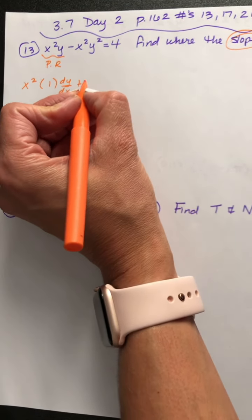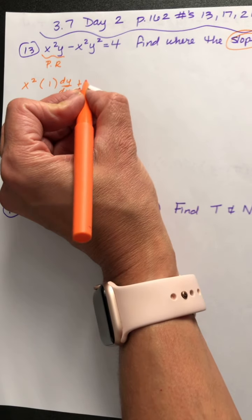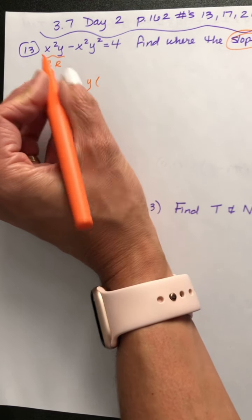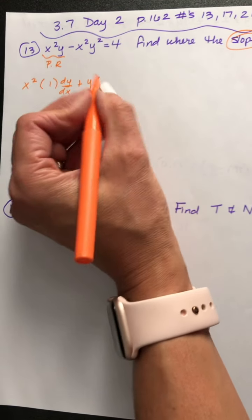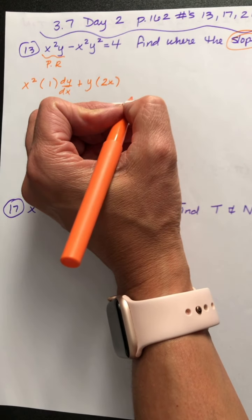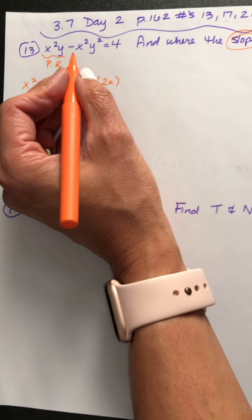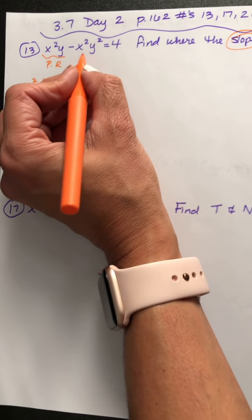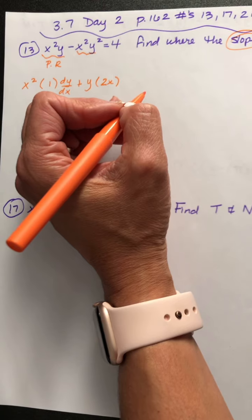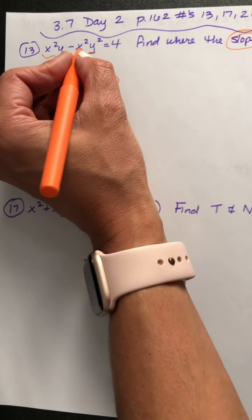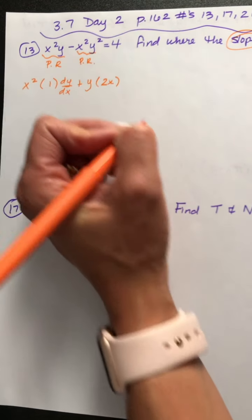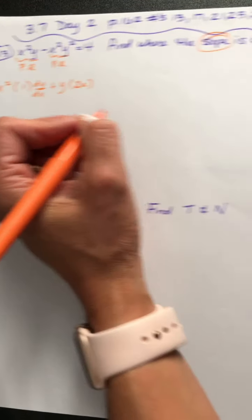Plus the second term, which is a y, times the derivative of the first term, x squared, so 2x. And now we can focus on the next term, which is also two quantities being multiplied together — so product rule again.